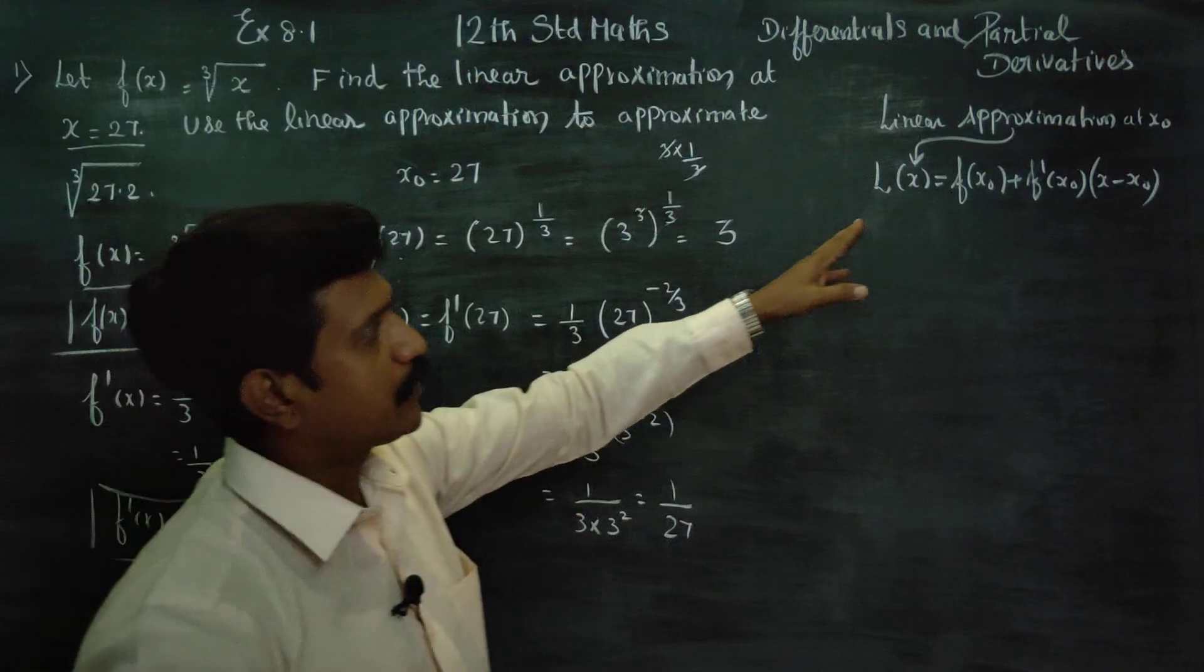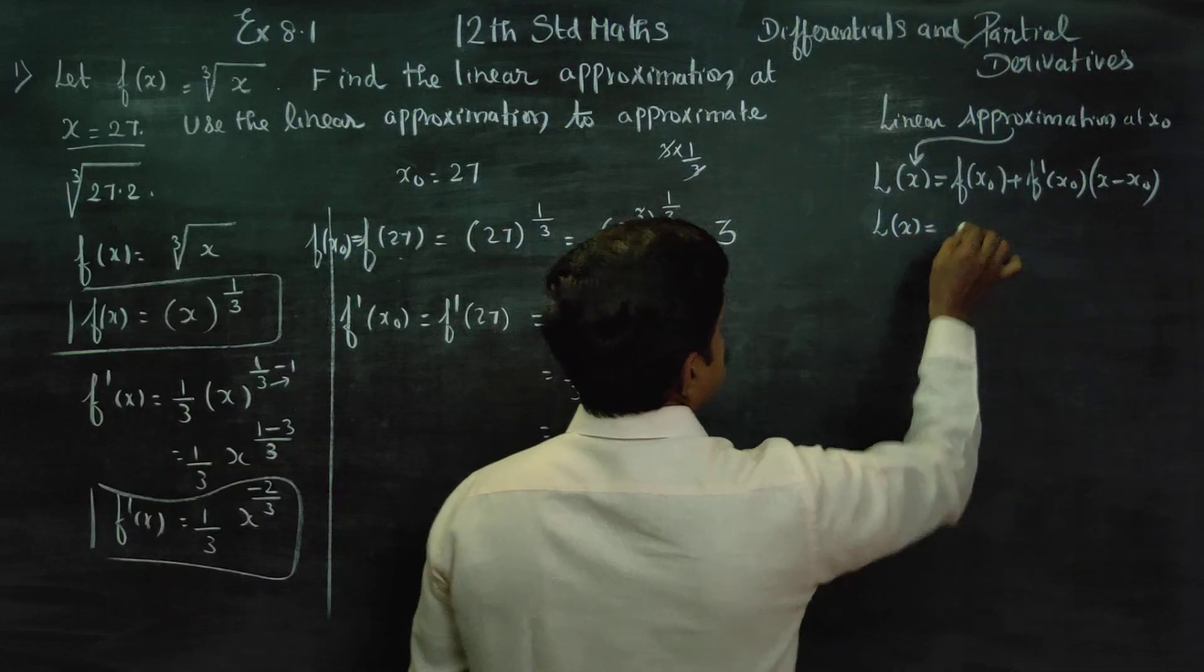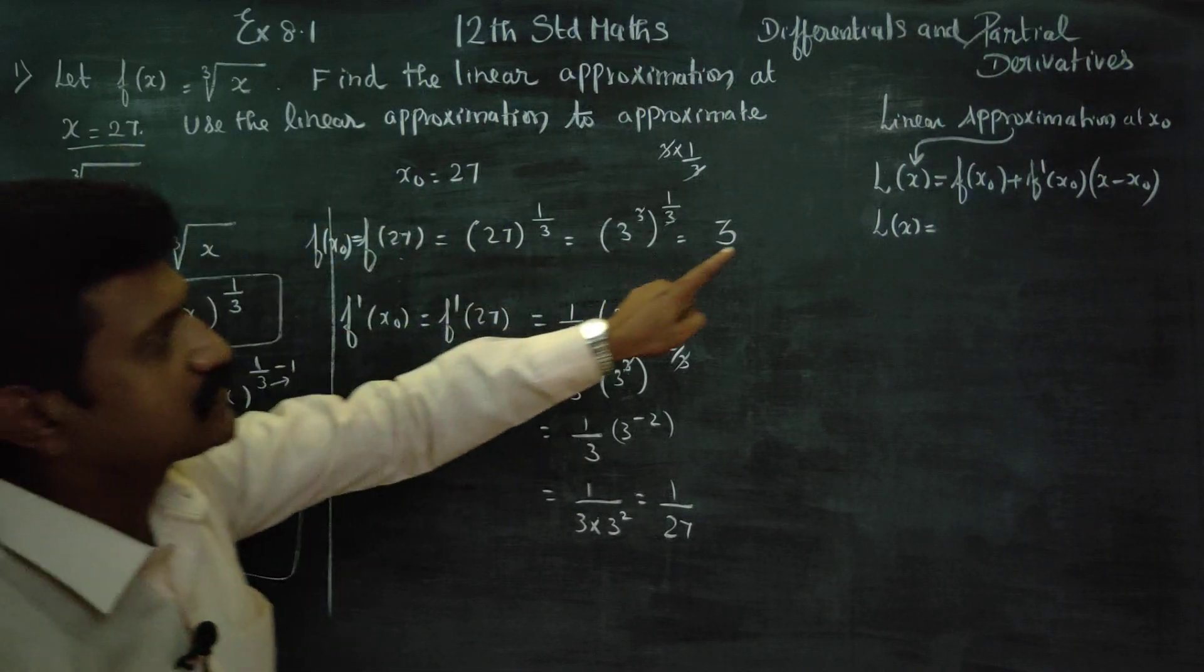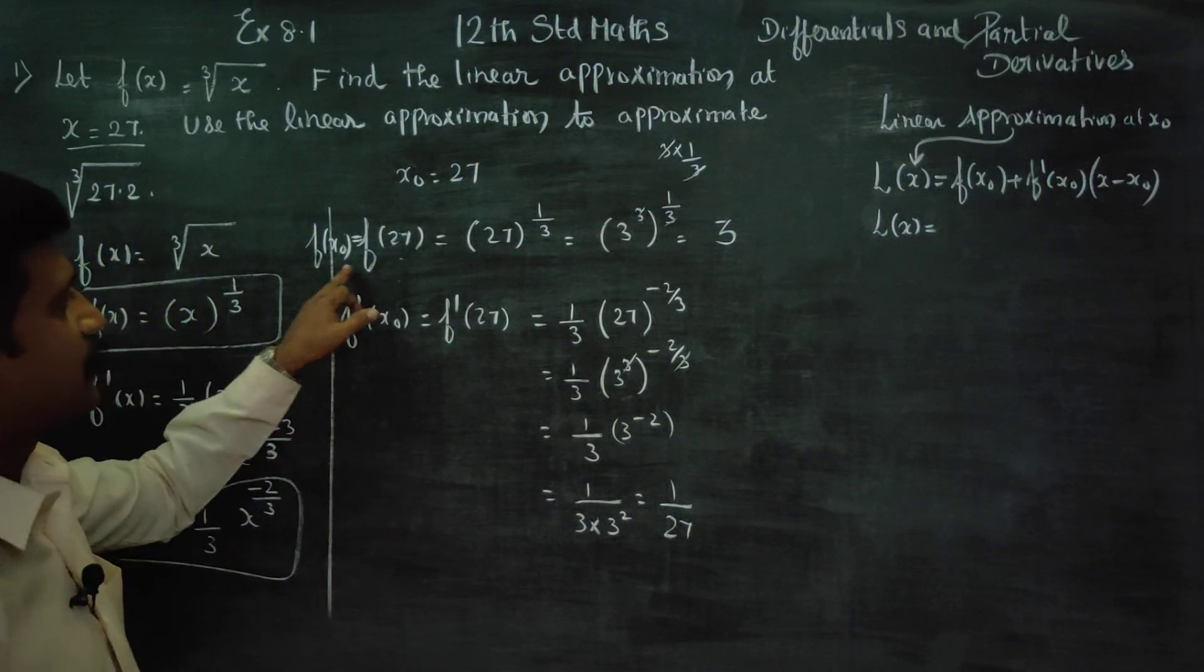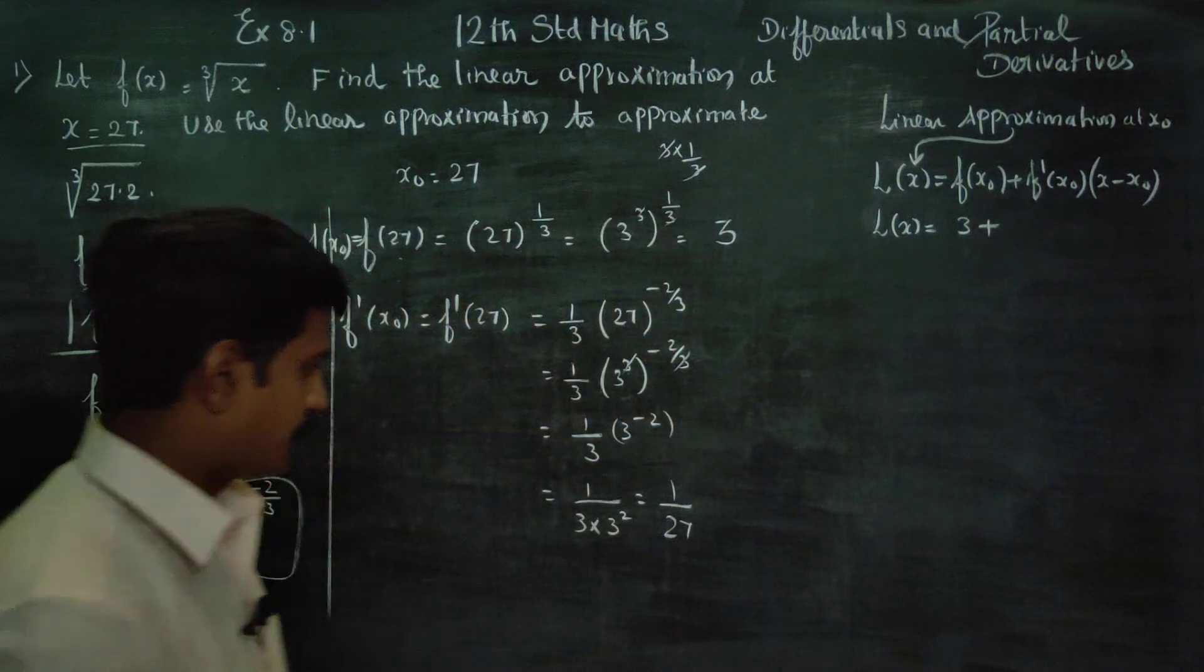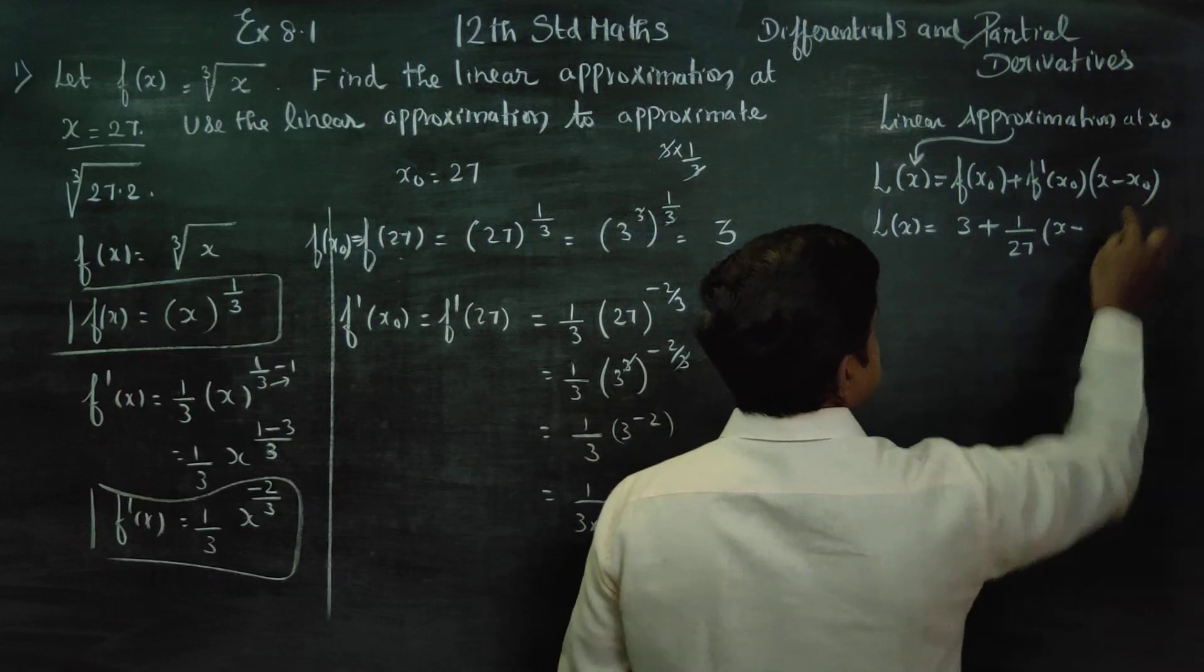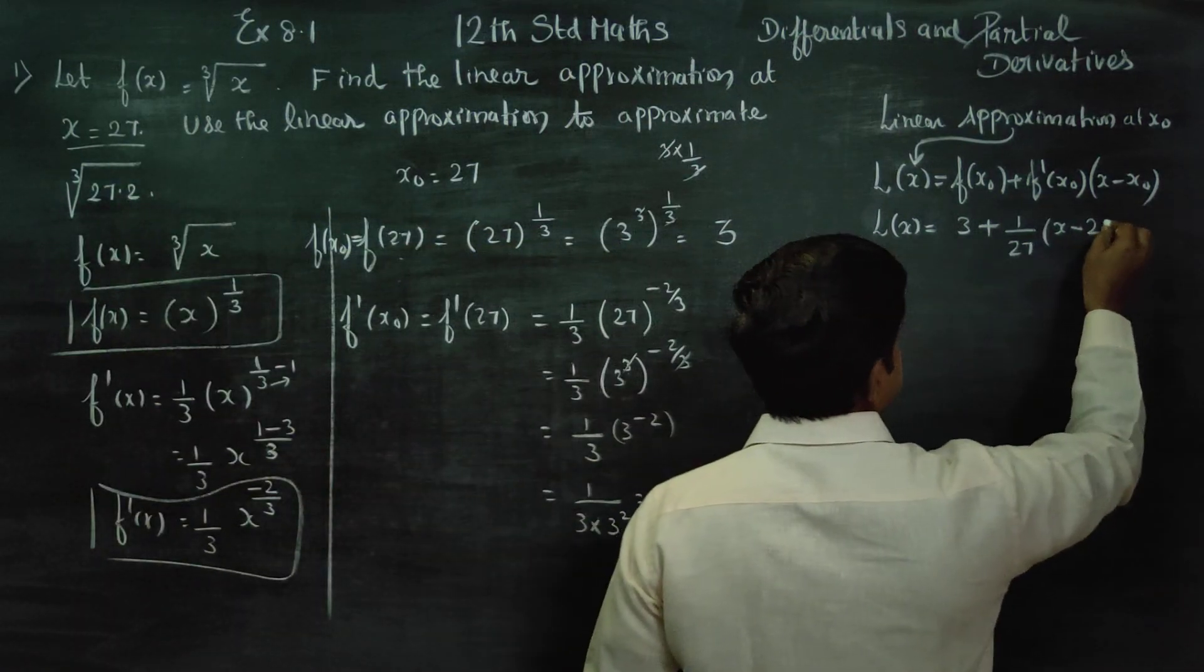Going to the linear approximation formula, L(x). First question asks to find the linear approximation formula at x equals 27. So x0 is 27. Then f(x0) equals 3, f'(x0) equals 1/27, and (x minus x0) equals (x minus 27).